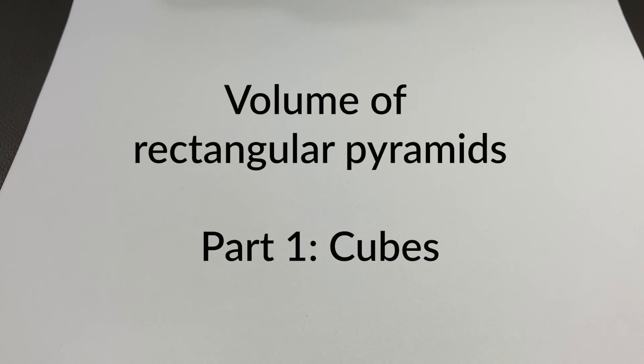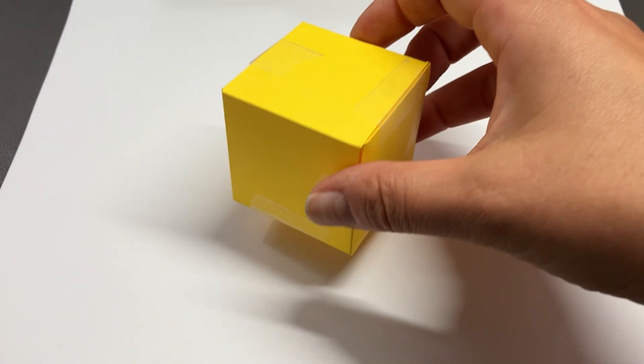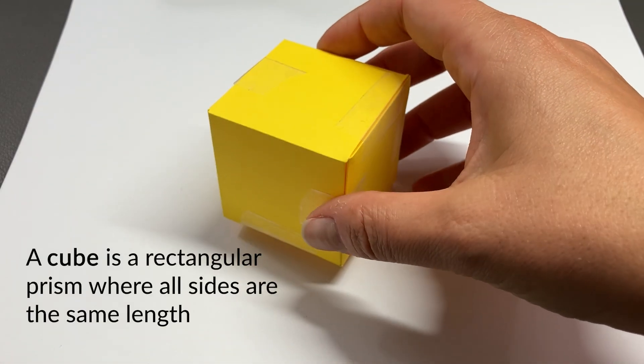We'll be exploring the volumes of rectangular pyramids today with cubes and rectangular prisms. This is a cube. All the sides are the same length.